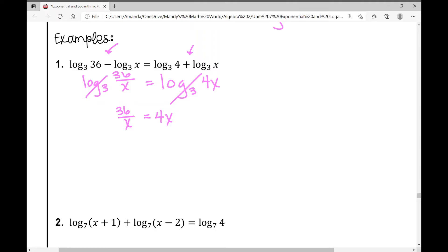Now in this case I need to get the variable on one side of the equal sign. So let's remove it from the denominator on the left by multiplying. When I do that I get 4x times x which is 4x squared. Now I need to get x squared all by itself. Divide both sides by 4 and what do I get? 9.